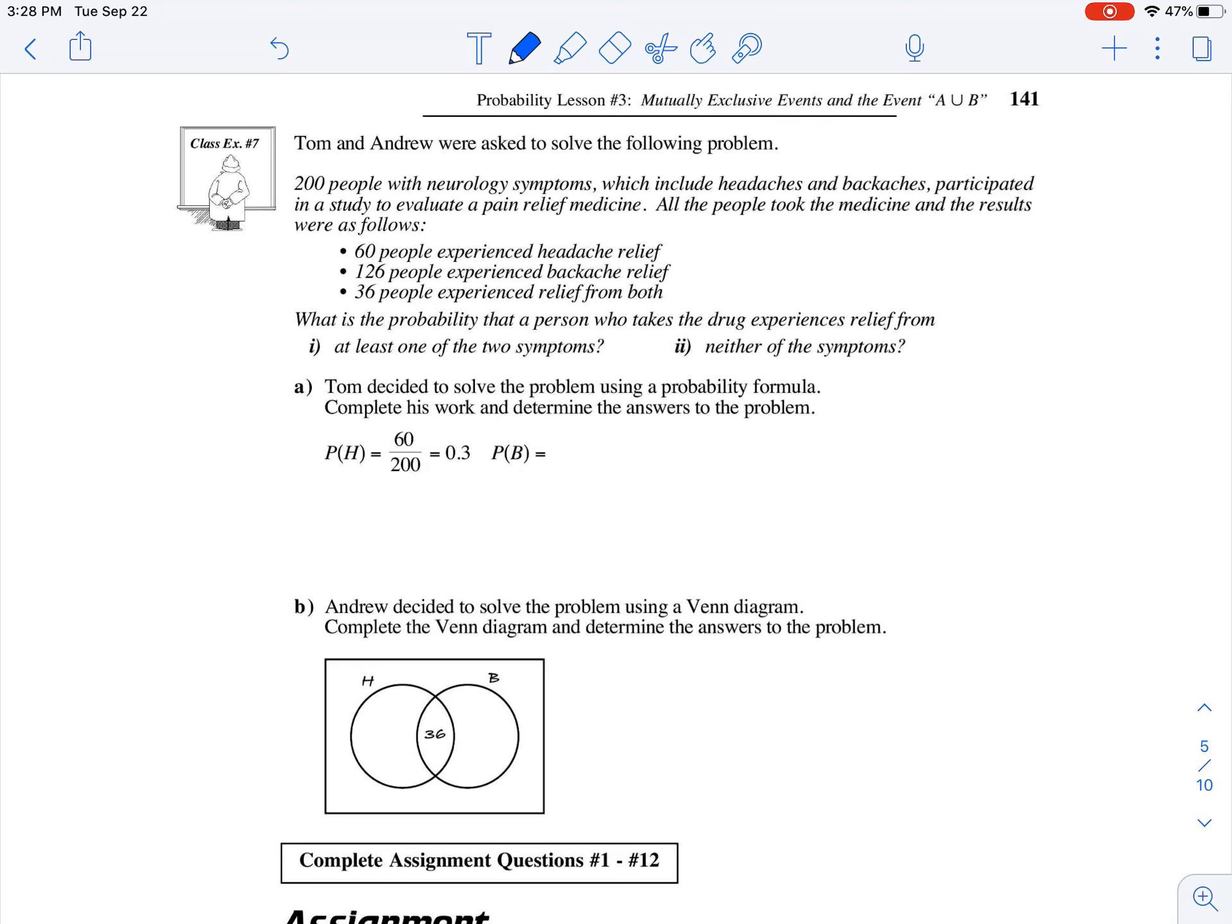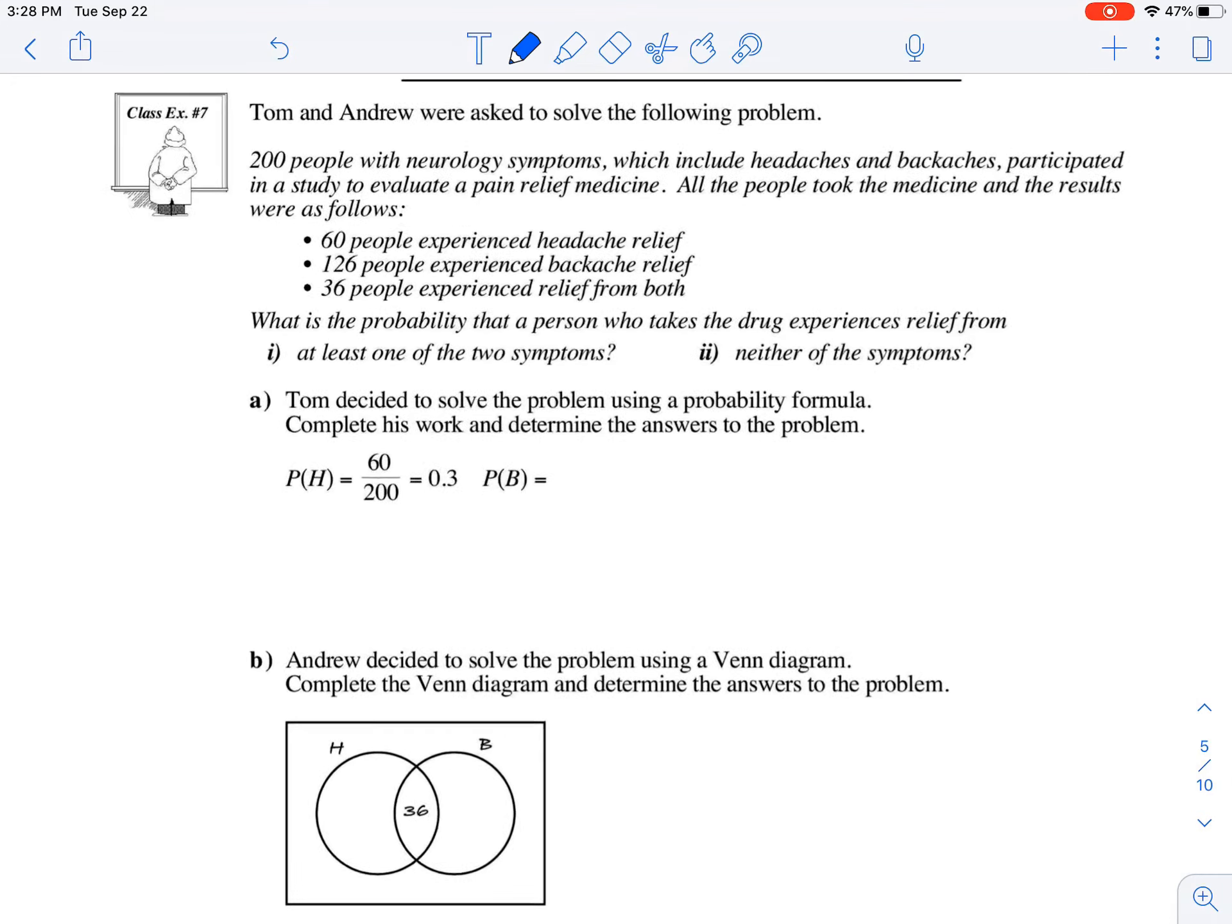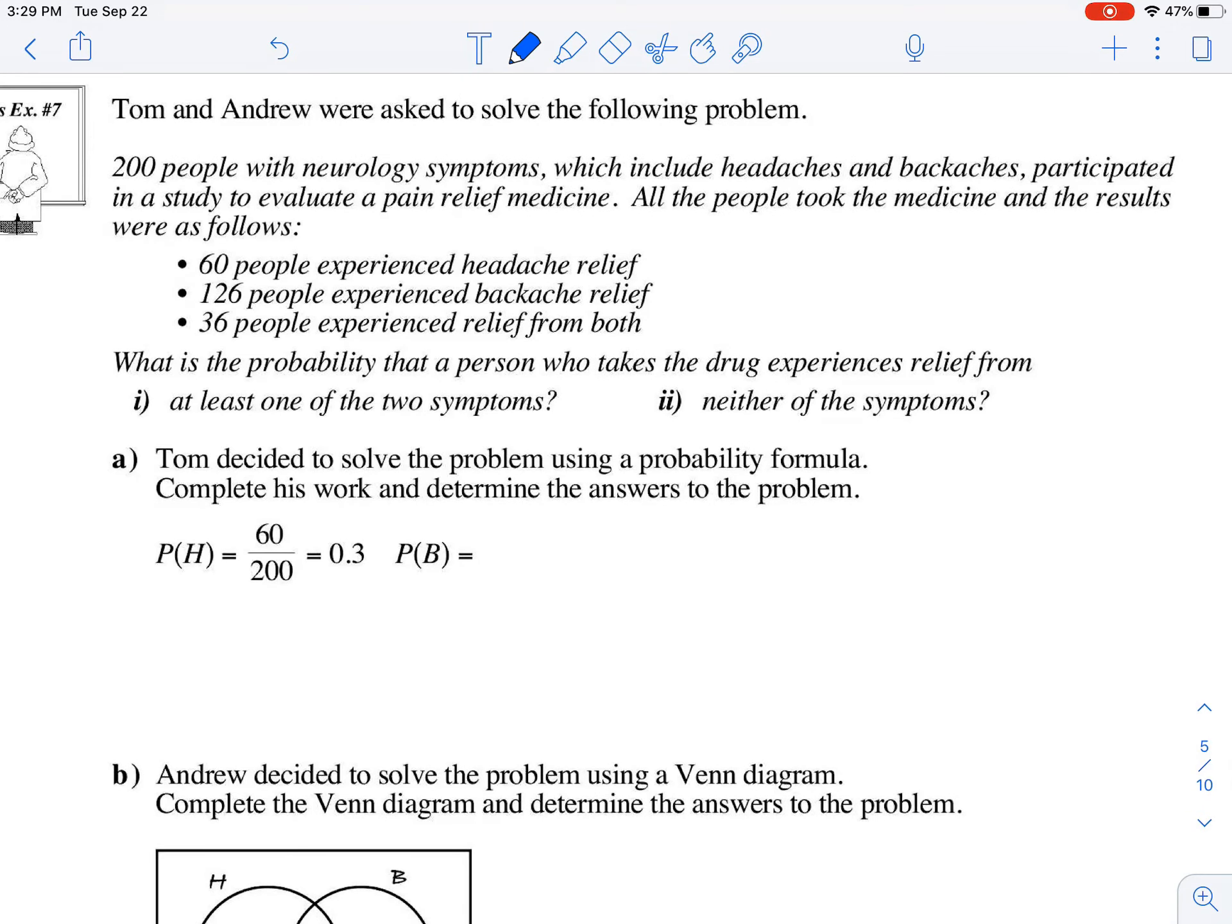60 people experienced headache relief, 126 people experienced backache relief, and 36 people experienced relief from both. What is the probability that a person who takes the drug experiences relief from, part one, at least one of the two symptoms? Part two, neither of the symptoms.